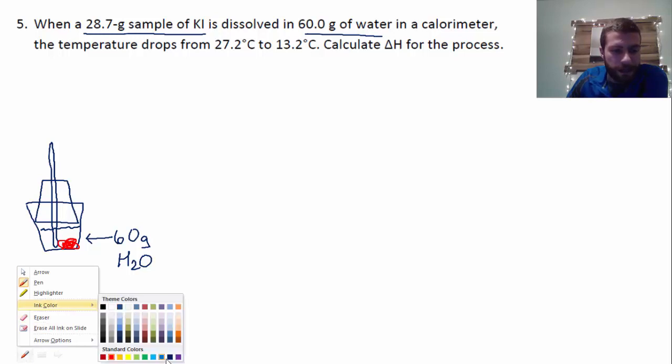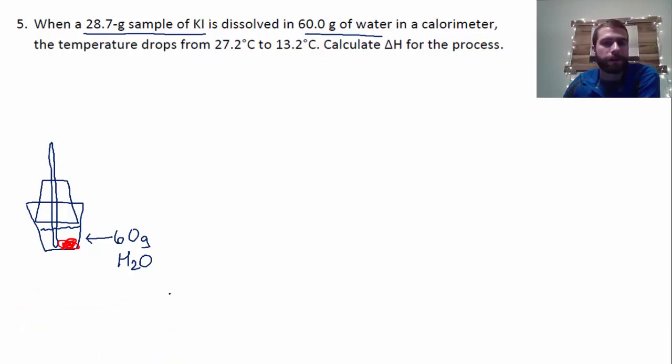And the idea is that that KI, potassium iodide, is going to dissolve and that process is going to do something. In fact, it says further up here that the temperature drops from 27.2 to 13.2. So remember, when the temperature drops, we've got a decrease in temperature. That means it feels colder to the touch. And we said in the lab when something feels colder, the process is generally going to be endothermic.